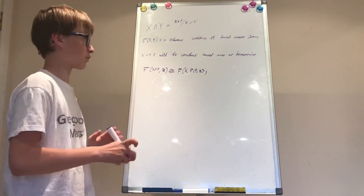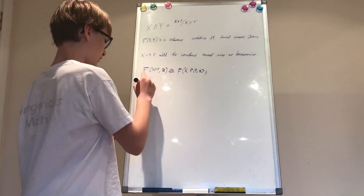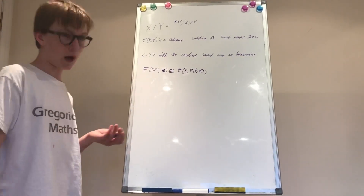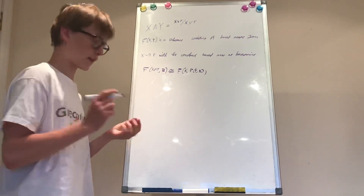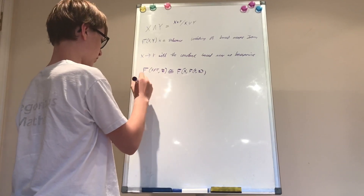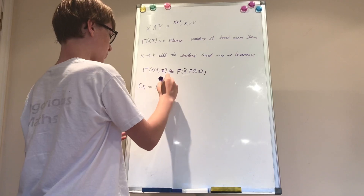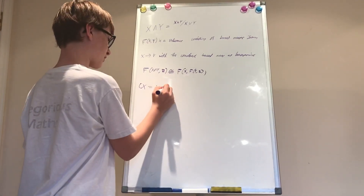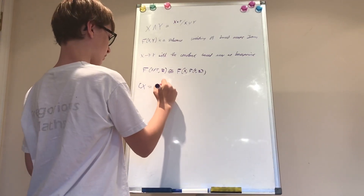Using the smash product and some generic base point star of X, and choosing one as a base point, we can define the cone of X. So C of X, the cone, is defined as X smash product I. This is not intersection, this is smash product.